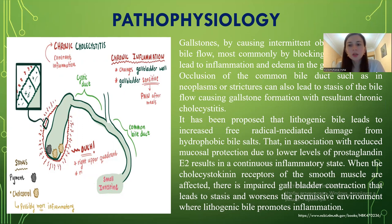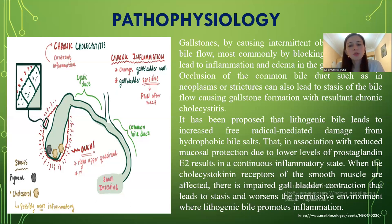It has been proposed that lithogenic bile leads to increased free-radical-mediated damage from hydrophobic bile salts that, in association with reduced mucosal protection due to lower levels of prostaglandin E2, results in a continuous inflammatory state. When the cholecystokinin receptors of the smooth muscles are affected, impaired gallbladder contraction leads to stasis and worsens the permissive environment where lithogenic bile promotes inflammation.